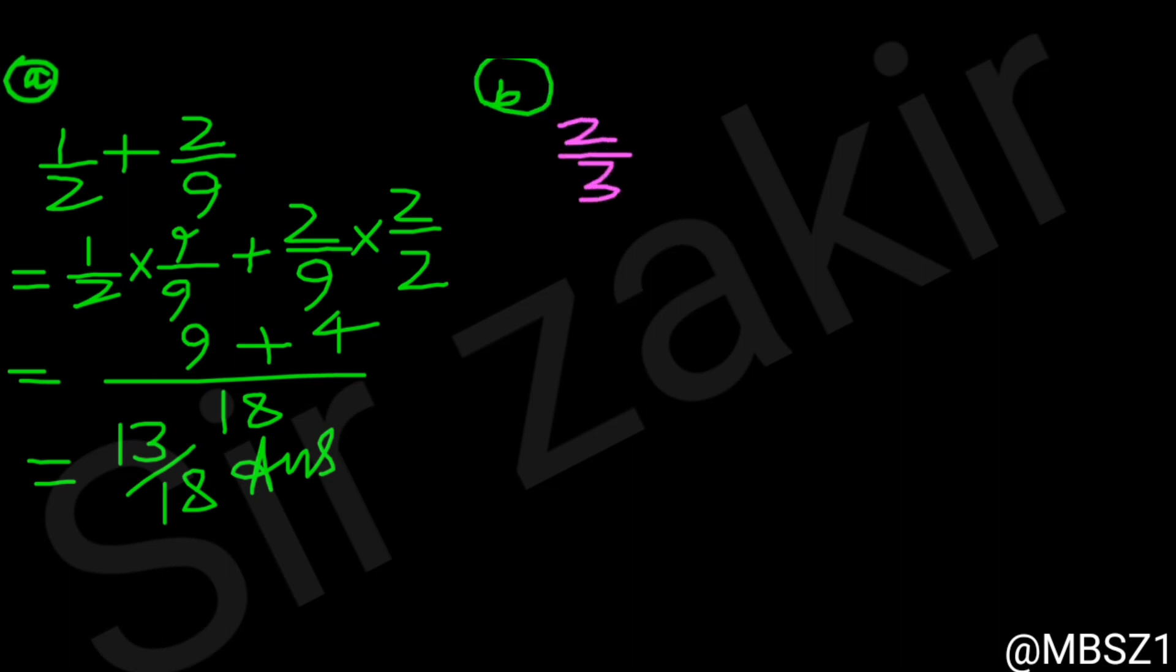Next part is 2 by 3 divided by 9 by 11. Let's do this one. It is 2 by 3. We can convert it into multiplication and then the fraction next to it will get inverted. 11 by 9 it becomes.